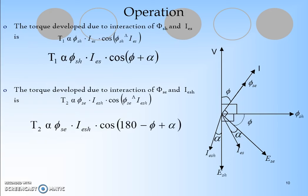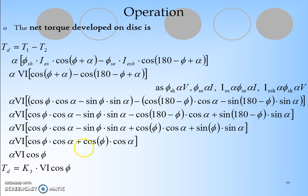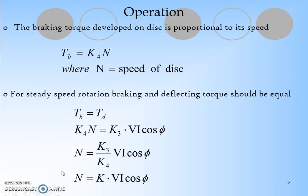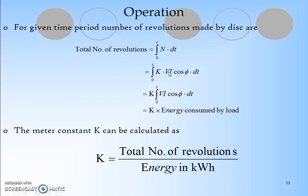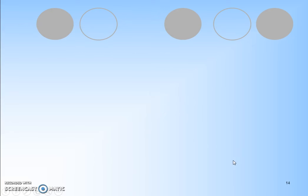These are the further detailed explanations of the energy meter operation. Finally, the net developed torque can be obtained from this formula: K3 × V·I·cos(φ). This is the AC power formula. The braking torque developed on the disc is proportional to its speed - if the speed is increasing the braking effect also increases. T_b = K4 × N, where N is the speed of the disc. The meter constant K can be calculated as K = total number of revolutions / energy in kilowatt-hour.